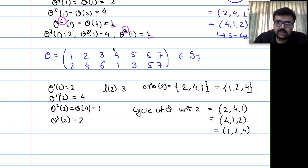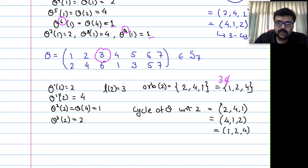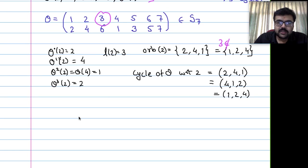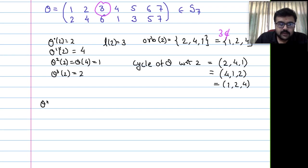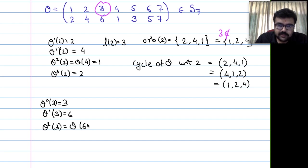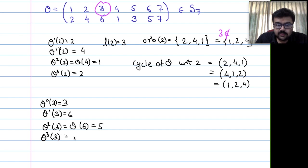Now start with 3, which is not in the previous orbit. Theta^0(3) = 3, theta(3) = 6, theta^2(3) = theta(6) = 5, theta^3(3) = theta(5). And theta(5) = 3 again. So L(3) = 3. The length with respect to 3 is also 3.